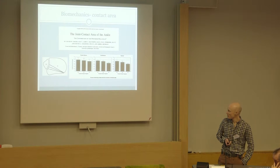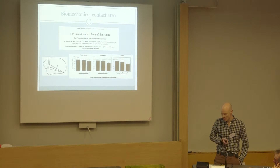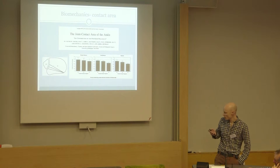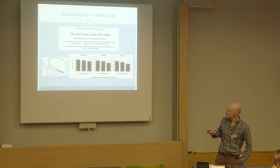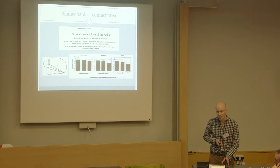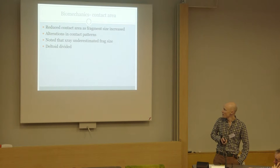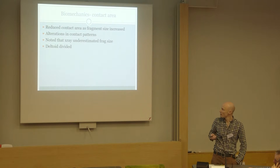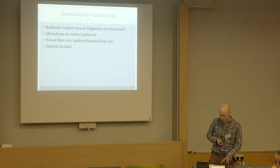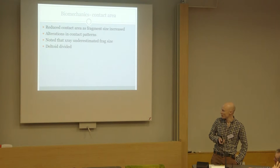But is there any data to actually support this? Biomechanical studies break down into those looking at contact area, contact stress, and stability. In terms of contact area, the most commonly cited paper took the existing rules of a quarter, a third, or a half, made corresponding osteotomies, and looked at contact area across the ankle. Unsurprisingly, contact area is reduced as the fragment size increases, and the contact pattern moves anteriorly with a larger surface area involved. One key finding was that when they tried to correlate their osteotomies with a lateral x-ray, there was a consistent underestimation of size — so what you think you're seeing on x-ray is not exactly what's wrong with the ankle.